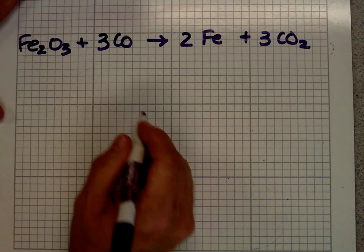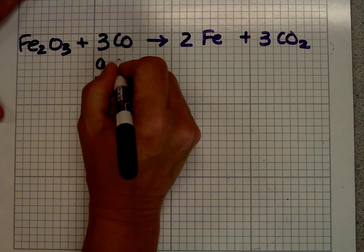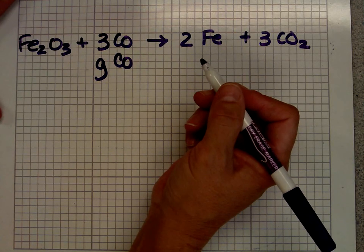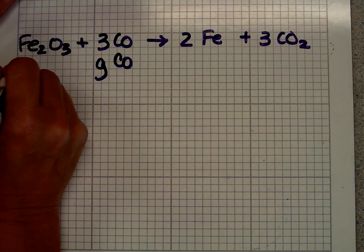First question, calculate the mass so I know I want grams of CO, carbon monoxide, needed to completely react with 50 grams of iron oxide.